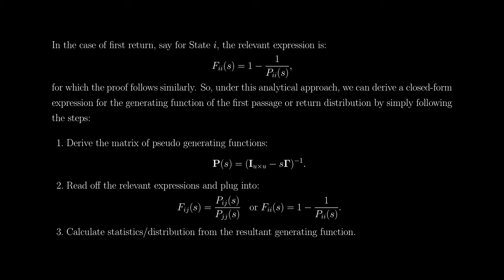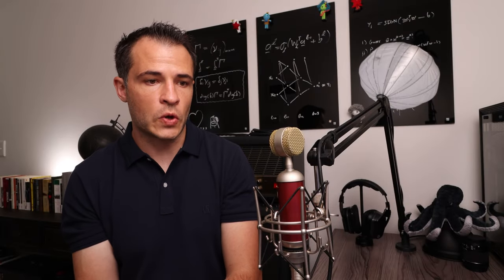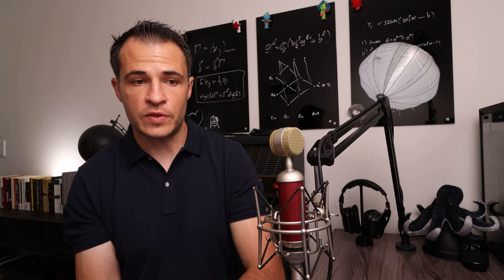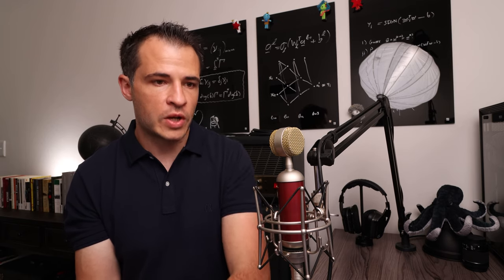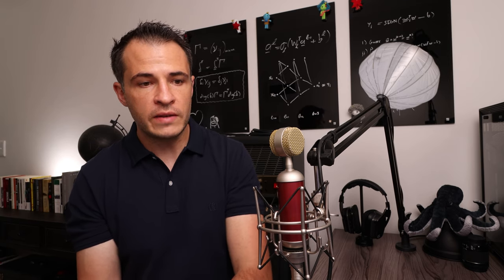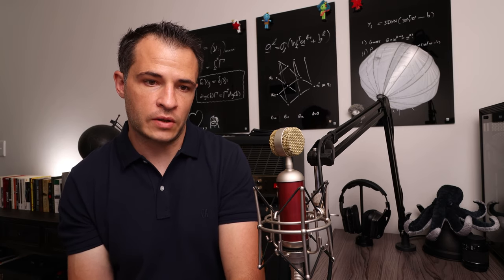Under this analytical approach, we can derive closed-form expressions for the generating function of the first-passage or first-return distribution by following these steps: (1) derive the matrix of pseudo-generating functions as (I − sΓ)⁻¹; (2) read off the relevant elements and plug them into the appropriate identities. We can then use the resulting expressions to calculate statistics or the full distribution over non-finite transition horizons analytically.